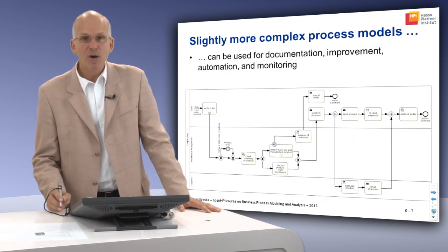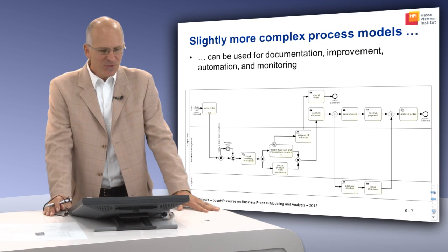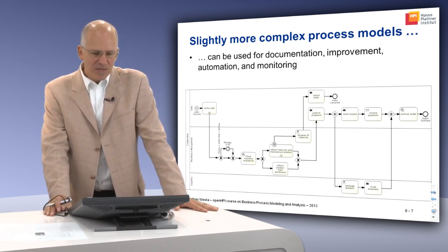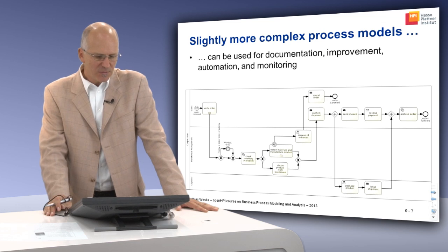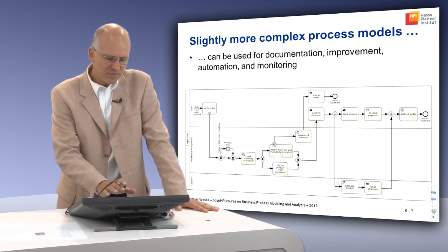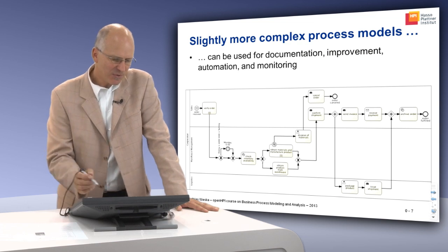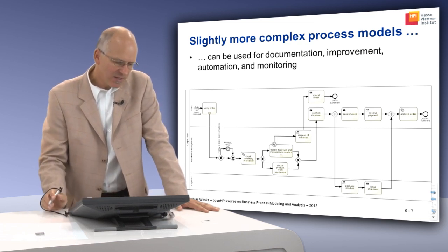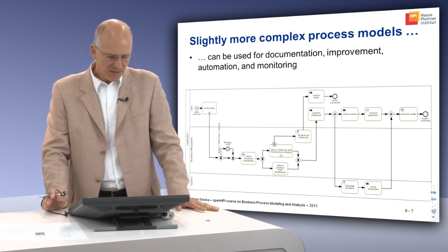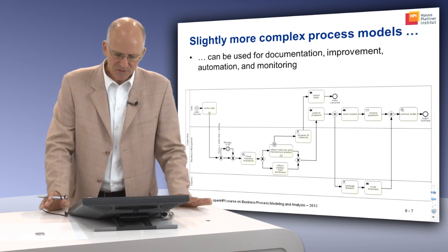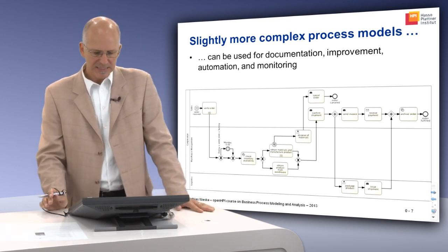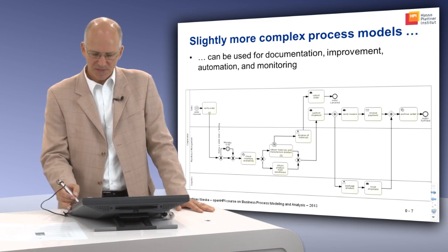Business processes can be much more complex than the one I showed. Slightly more complex processes can be used for documentation, improvement, automation, and monitoring. Here you have different domain-specific roles — Sales, Warehouse Management, and Logistics — in an order process. You can look at decisions, exceptions, the handover of work, and many more things that you could not discuss in the simpler model.